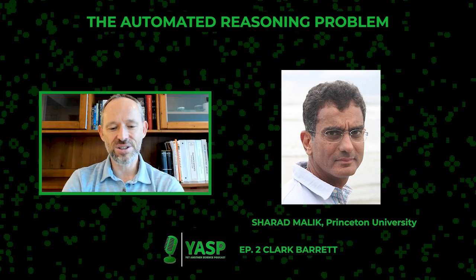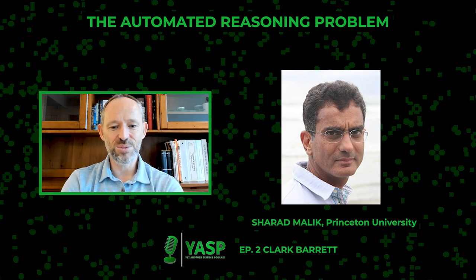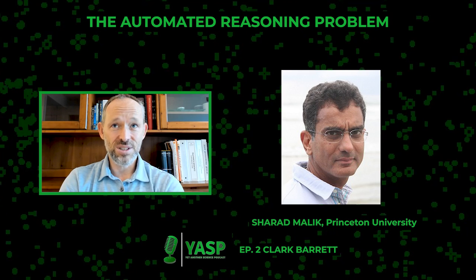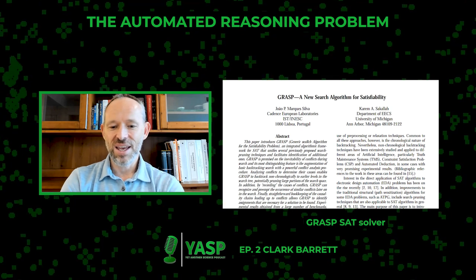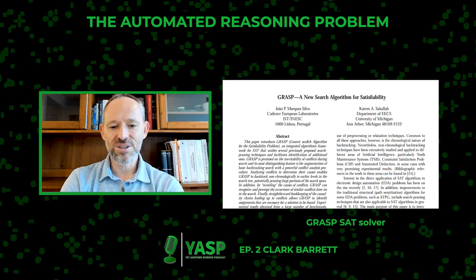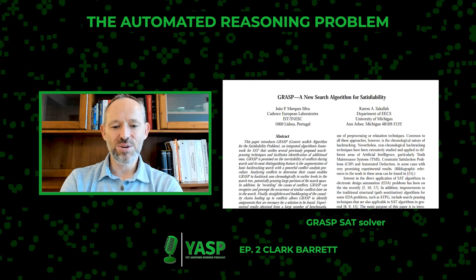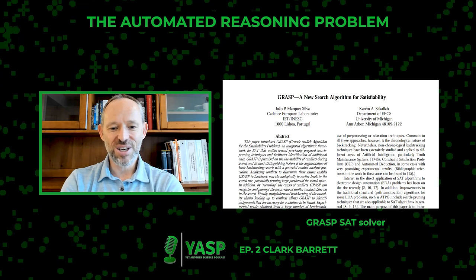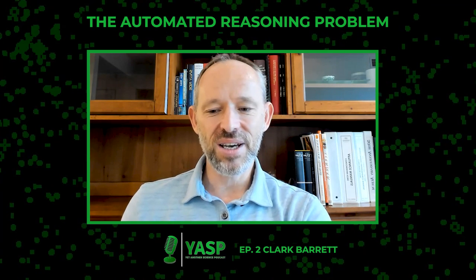The big breakthrough came in Sharad Malik's group at Princeton. He's an electrical engineering professor who had undergraduates trying to build a SAT solver in hardware. The best SAT solver at the time was a tool called Grasp, written in C++. They had to rewrite it in C, pull all the memory, simplify the heuristics, and profile it. At the end of the day their solver was thousands of times faster than Grasp. They never got around to building the hardware because they had this incredible breakthrough. This was the beginning of research showing that even an NP-complete problem can be solved in practice in many cases.